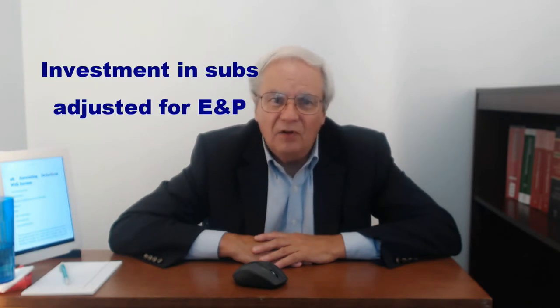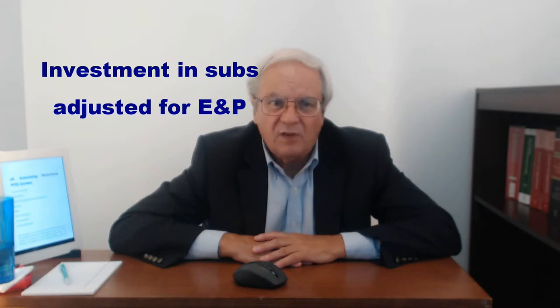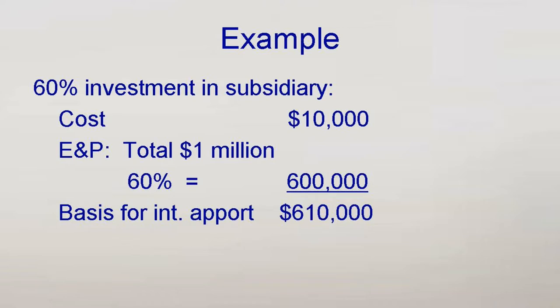One type of asset that must be counted in computing asset bases for interest apportionment is investment in subsidiaries. The basis must be counted even in years the subsidiary pays no dividends, and must be apportioned among the baskets of income that a dividend would produce, based on E&P. The basis must also be adjusted for a corporate shareholder by its share of E&P of the subsidiary. For example, assume Wobbly Widgets has a 60% foreign subsidiary that sells widgets. The subsidiary has a million dollars of E&P and no other income. Wobbly's cost of the shares is $10,000. Wobbly's adjusted basis for interest apportionment will be 60% of the million dollars E&P plus the $10,000 cost, or $610,000 — considered all general basket.